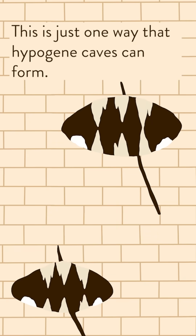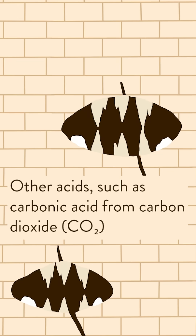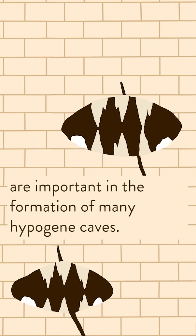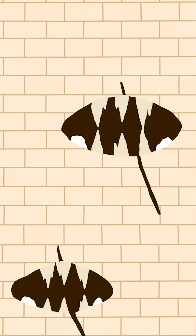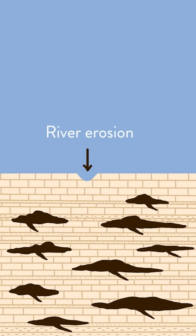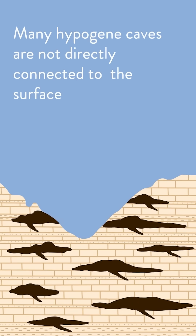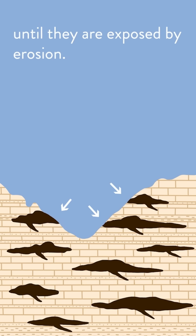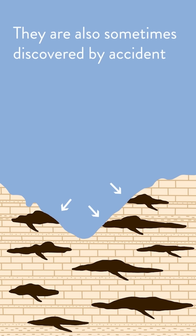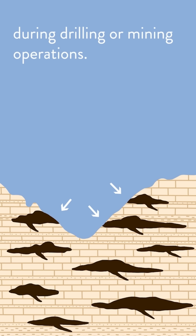This is just one way that hypogene caves can form. Other acids such as carbonic acid from carbon dioxide are important in the formation of many hypogene caves. Many hypogene caves are not directly connected to the surface until they are exposed by erosion. They are also sometimes discovered by accident during drilling or mining operations.